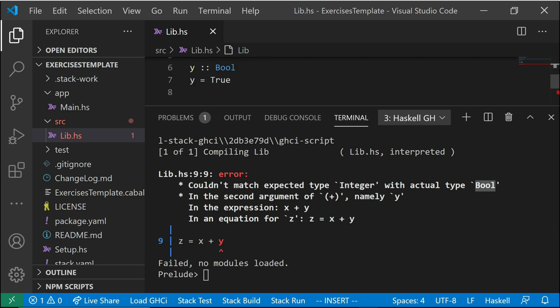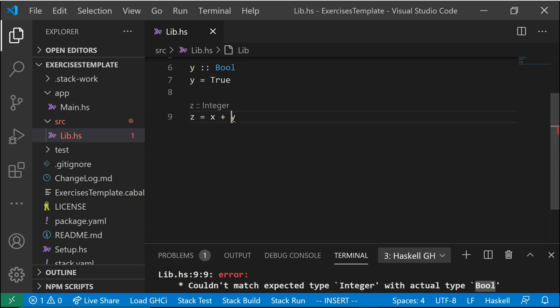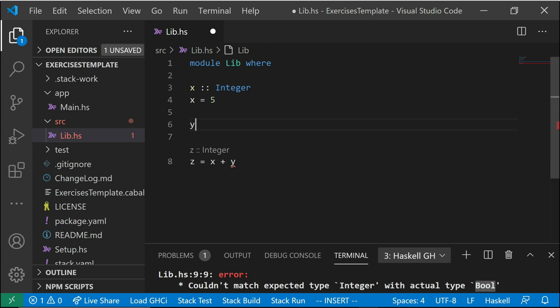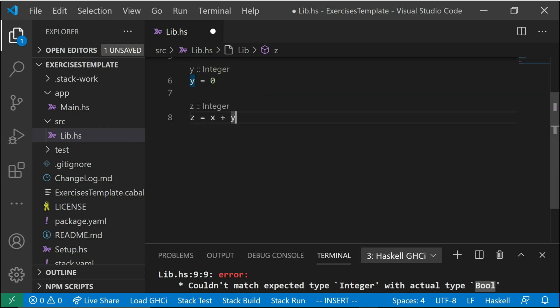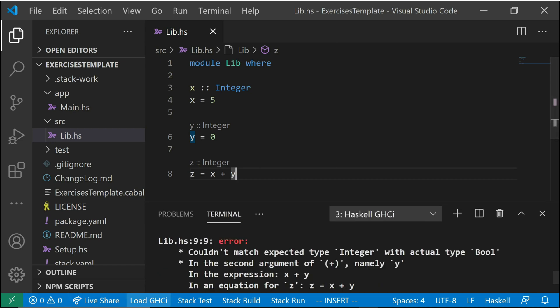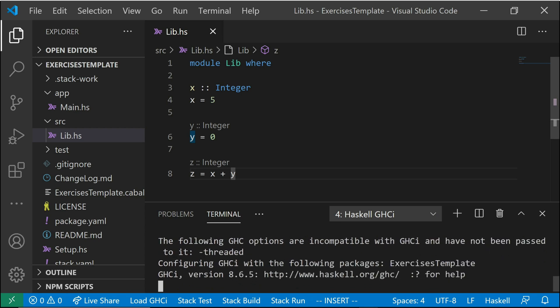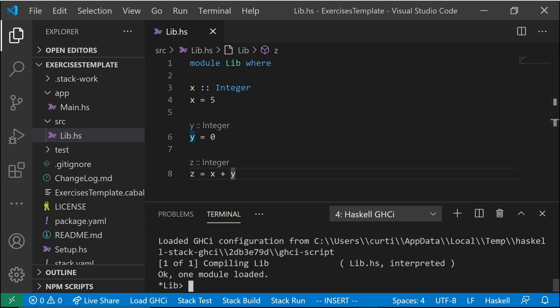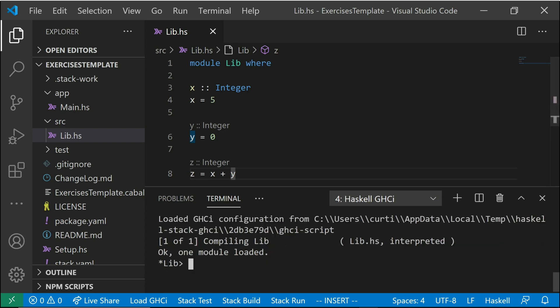So now we need to go and be like, how can I fix this? How can I make this better? Well, maybe Y shouldn't be a bool. Maybe it should be an integer. So maybe I meant for Y to be equal to zero, to an integer type. And you'll see that now the error disappeared. Now nothing is being underlined. And if I load this into GHCI, it loads fine. It says one module loaded lib. It's fine and dandy now.